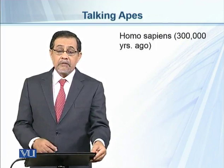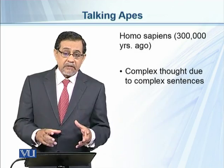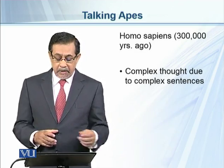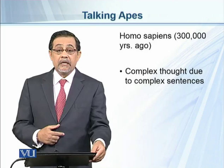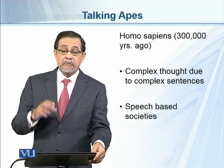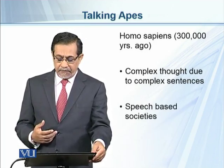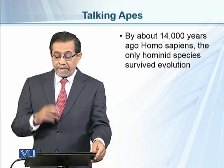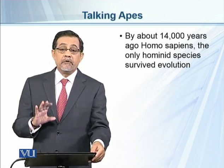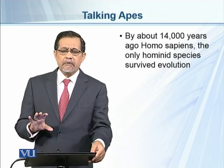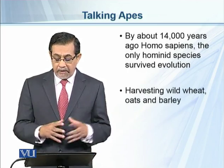Homo sapiens, emerging 300,000 years ago, were the modern humans. They could use complex thoughts and complex sentences because of their developed cognition, and their societies were based on communication. By about 14,000 years ago, Homo sapiens were the only hominid species to survive evolution — the modern men.